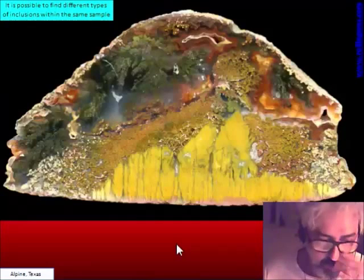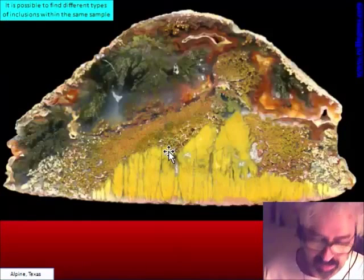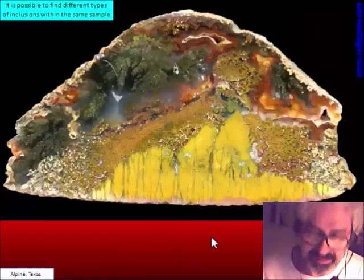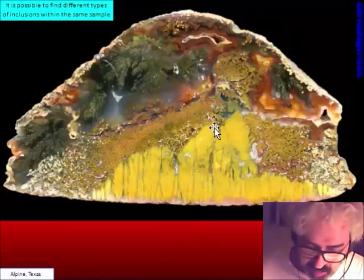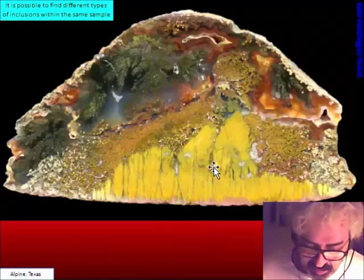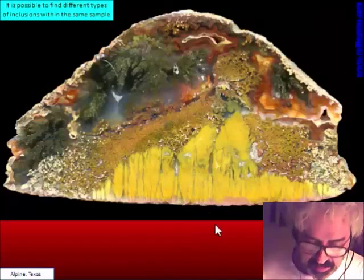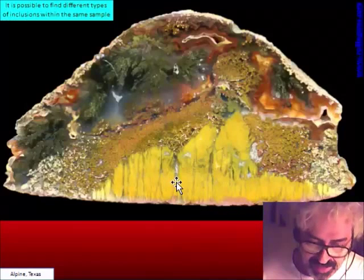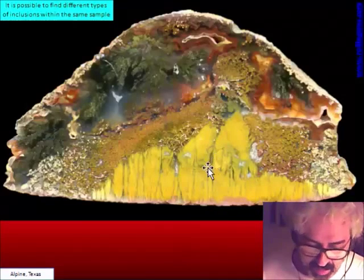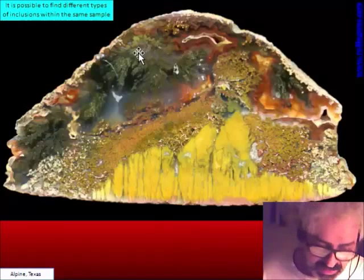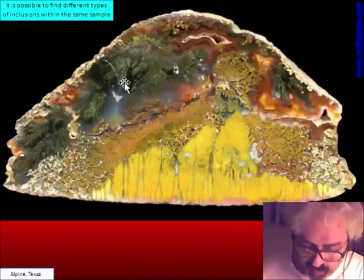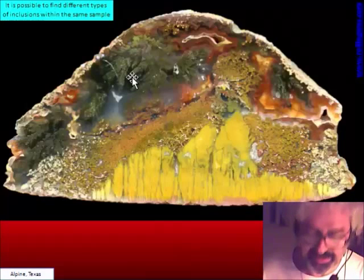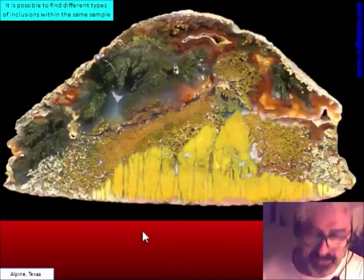It is also possible to find different types of inclusions inside the same nodule. Here we have almost three materials with different colors and different structures: there is some kind of plume growing from the base that is yellow, a brown more mossy material, and a black dendrite on top. This world is quite complex when looked at closely.